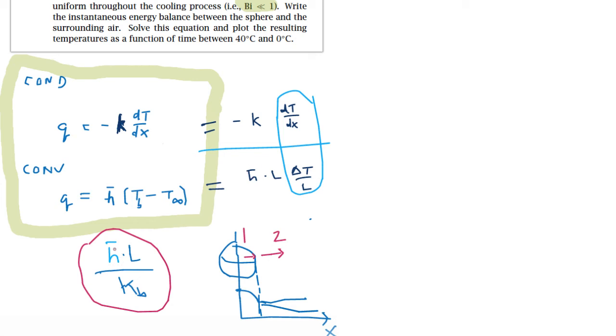If that was occurring by convection versus conduction, which one would be faster? Which term right here out front would be larger? If the h bar times L is really small compared to the conductivity, this number is going to be much less than one.